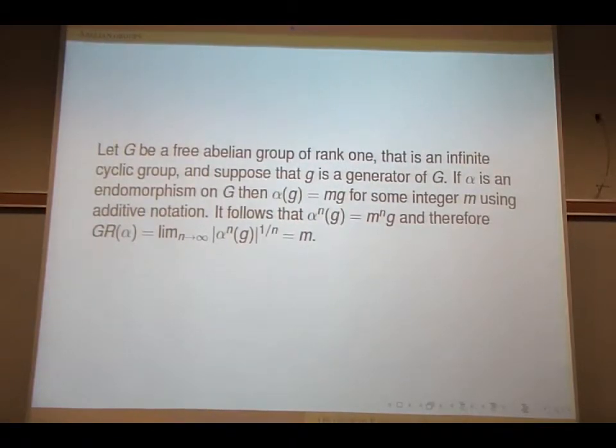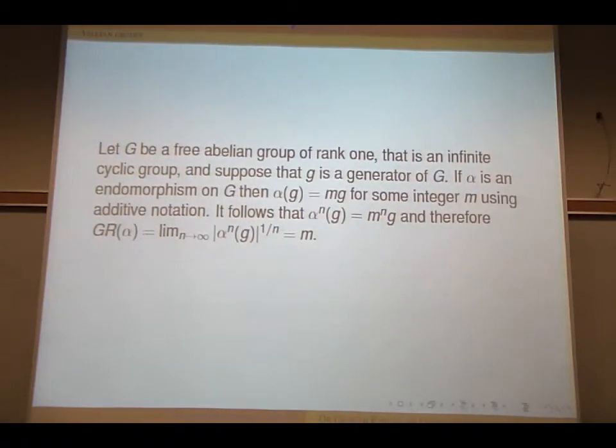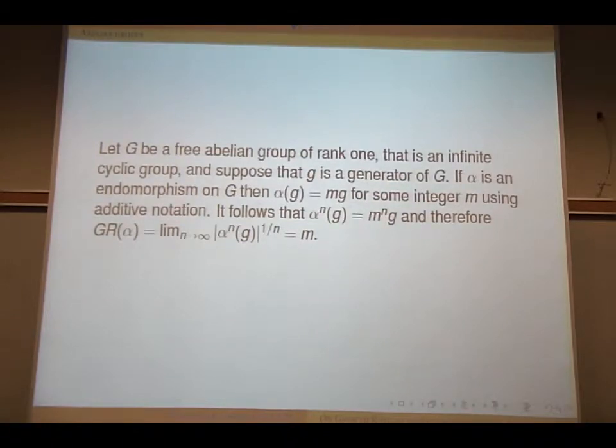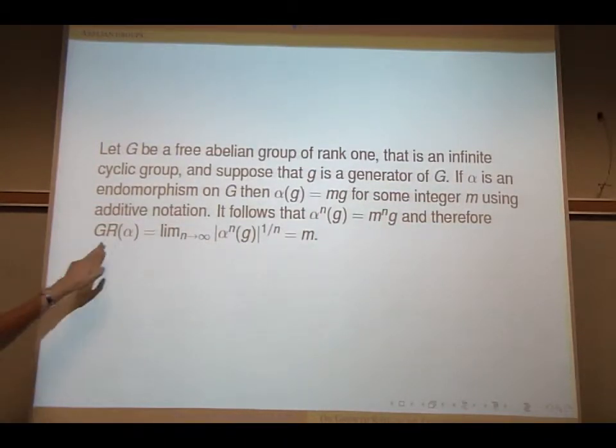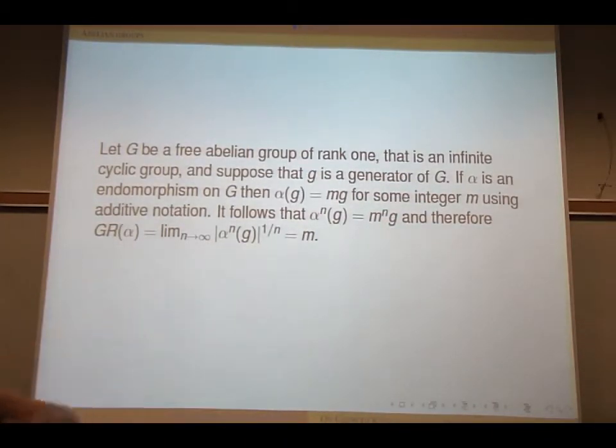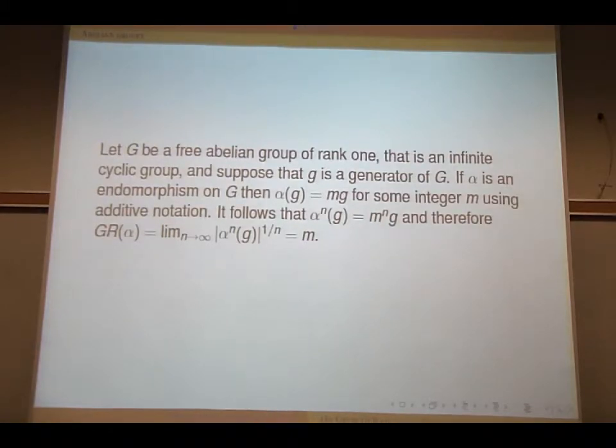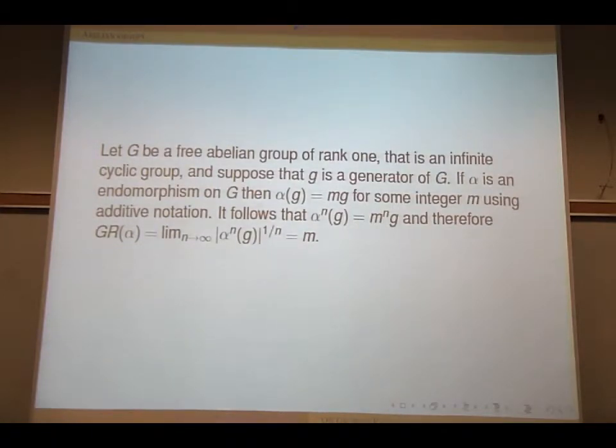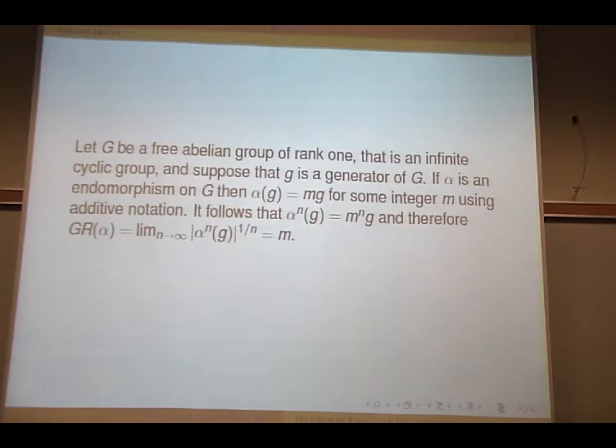And suppose G is its generator and alpha is an endomorphism of G, and where alpha(G) is mG for some integer m using additive notation. Then it follows that alpha^n(G) is m to power n times G, and if you find the limit, it actually gives you m. So this is an interesting observation that the growth rate of endomorphism of a cyclic group is m.